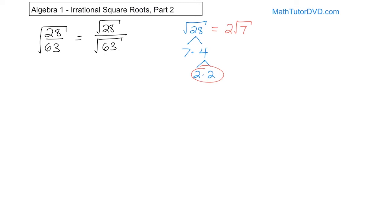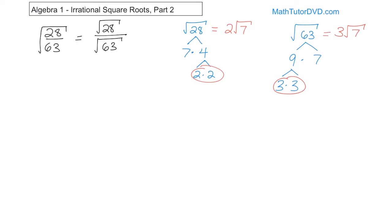Now let's work on the denominator, the square root of 63. What times what gives you 63? Well, 9 times 7 is 63. 9 can be written as 3 times 3, and I'm done because the 3s are prime and the 7 is prime. I see a pair of 3s, so I pull that 3 out of the radical, and the square root of 7 remains underneath. So the square root of 28 is 2 times the square root of 7, and the square root of 63 is 3 times the square root of 7.